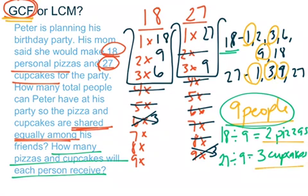Let's take a look at two more examples. In these examples, you're going to try and figure out GCF or LCM, and then solve them. We'll do it in two parts: first identify GCF or LCM and check, then pause again to go through the steps, solve the problem, and answer the question.